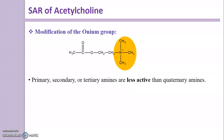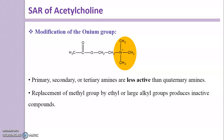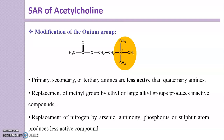Primary, secondary, or tertiary amines are less active than quaternary amines. Replacement of the methyl group by ethyl or larger alkyl groups produces inactive compounds, so this nitrogen must possess a methyl group. Replacement of nitrogen by arsenic, antimony, phosphorus, or sulfur produces less active compounds not used clinically. For example, replacing nitrogen by sulfur forms a sulfonium ion, and by arsenic forms an arsenium ion — both are less active.